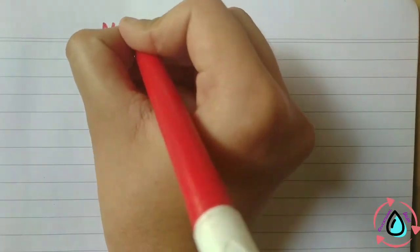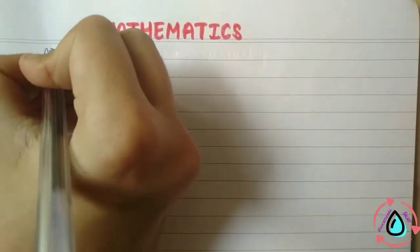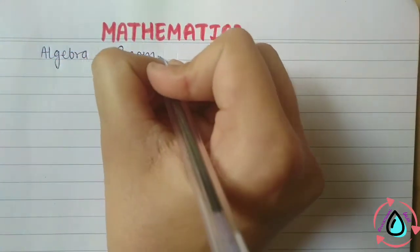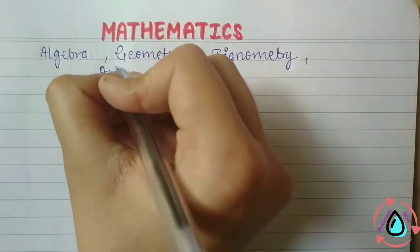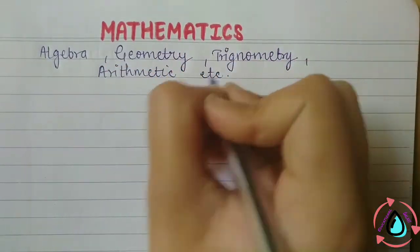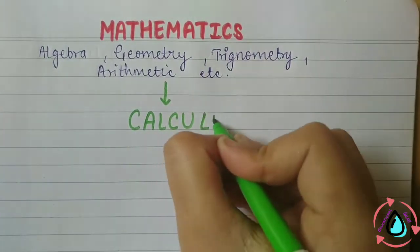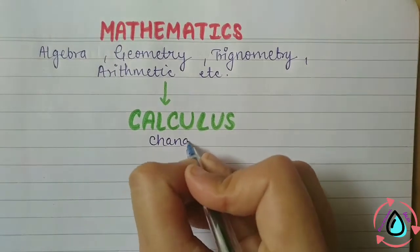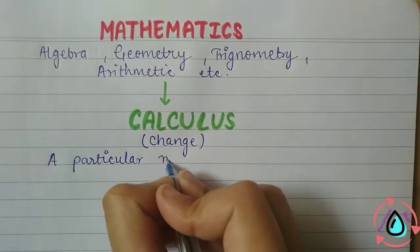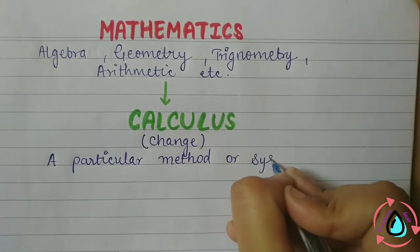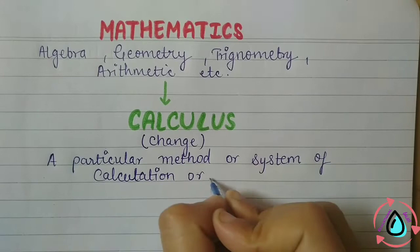For today's topic we start with the most basic thing in Mathematics. In Mathematics we study different topics in different branches such as Algebra, Geometry, Trigonometry, Arithmetic, etc. There are many branches in Mathematics, one of which is Calculus. Calculus is the branch of Mathematics in which we study particularly about changes — a particular method or system of calculation or reasoning.